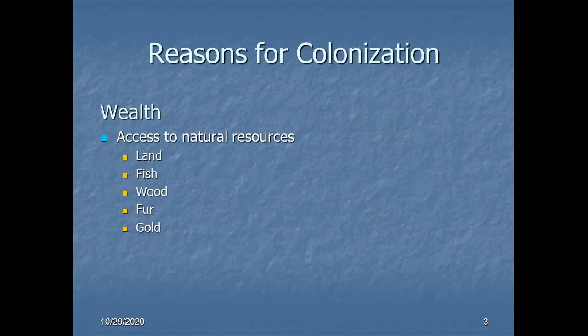As far as the political and technological innovations that made the colonial endeavor coming out of Europe possible, we discussed those in the introduction to early modernity, so it's time to move on and consider why a country might want to set up a colonial empire. The most obvious one is pretty clearly wealth. And the first really obvious element of wealth that a nascent colonial power is going to have its eye on is land, along with such items as fish, wood, fur, and gold.